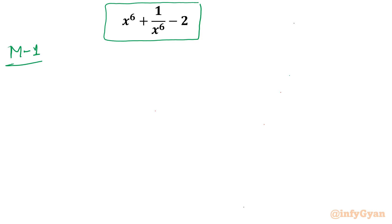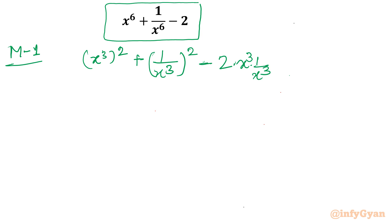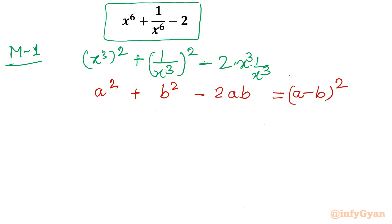Let us consider the first approach as the conventional general method. You can see this is already a perfect square: it is (x³)² plus (1/x³)². And it is minus 2, which you can think of as 2 times x³ times 1/x³, so it is minus 2. Compare with the algebraic identity: a² + b² - 2ab, where a is x³ and b is 1/x³. This is the (a - b)² identity, so we can write: (x³ - 1/x³)². Factorization done — this is approach one.